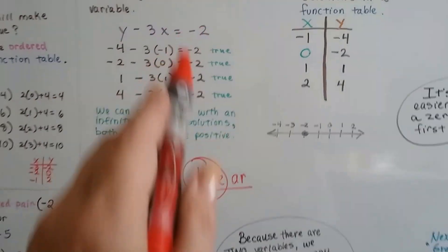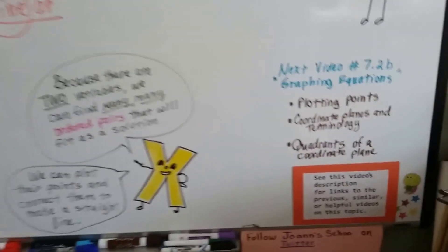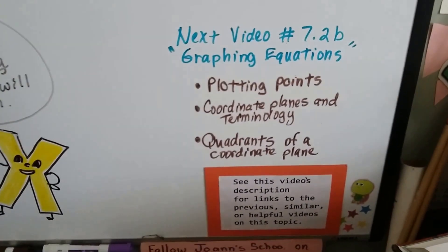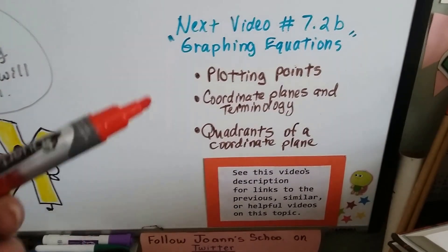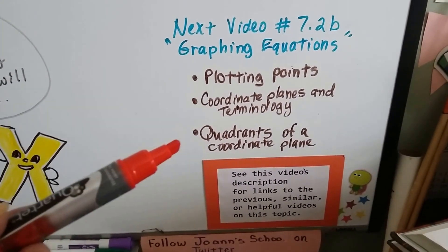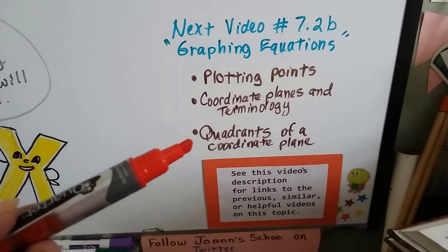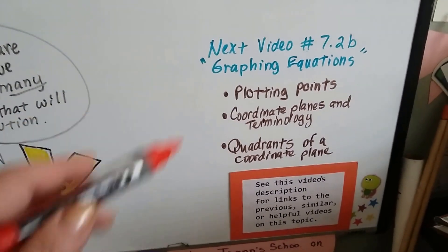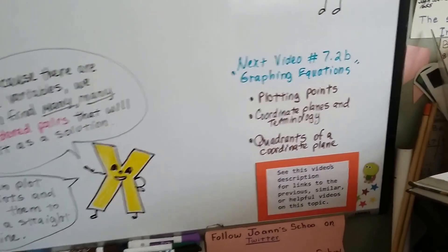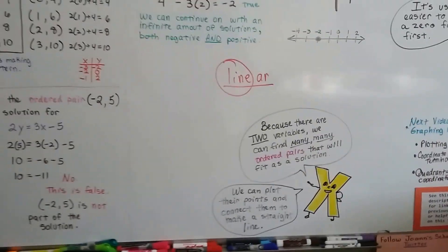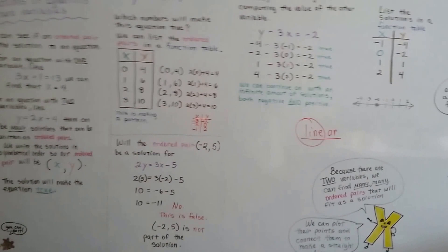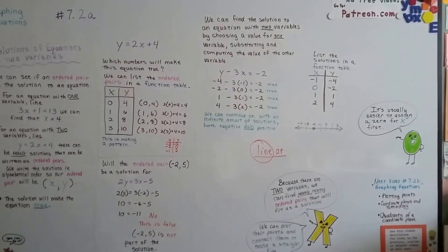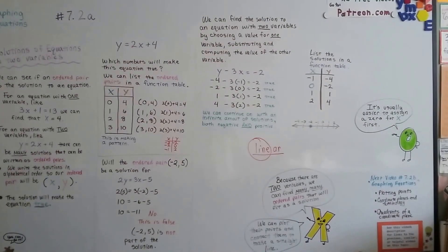So that linear equation can be plotted on a coordinate plane, and we're going to do that in the next video. 7.2b, we're going to be graphing equations. And if you want to review, or if you haven't seen plotting points, the coordinate planes and terminology, and the quadrants of a coordinate plane, those links will be in this description. And if you haven't seen these, or you don't know what they are, it's really important that you watch those for a few minutes. They're not very long. Before you get into graphing equations, otherwise you could get lost.